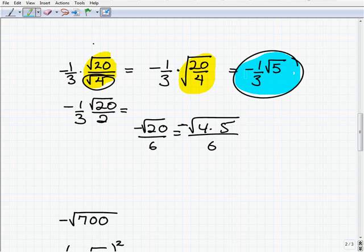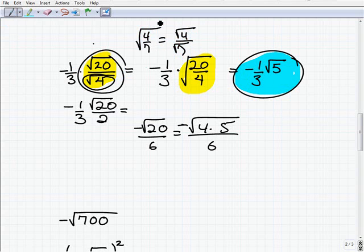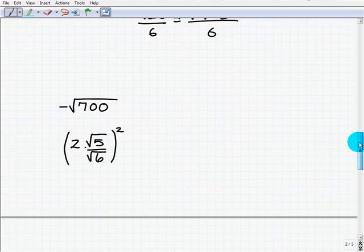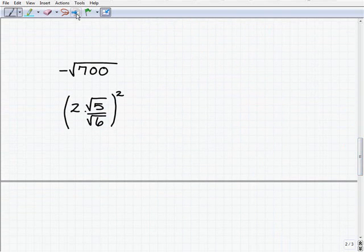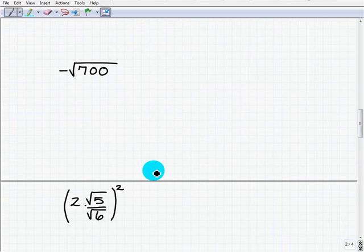But bottom line here is just recognize that the properties can be applied in reverse. So instead of having a situation like this, 4 over 7, where you split into two separate radicals, you can also take two separate radicals and put them under one big radical. So it all depends on what's most advantageous. And matter of fact, that's also a little bit of a matter of opinion, but whatever works for you.